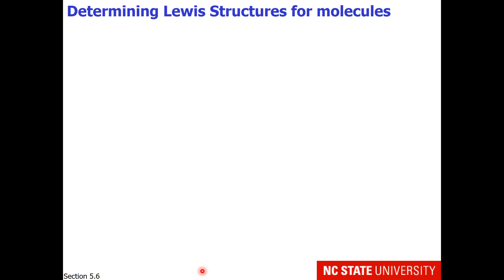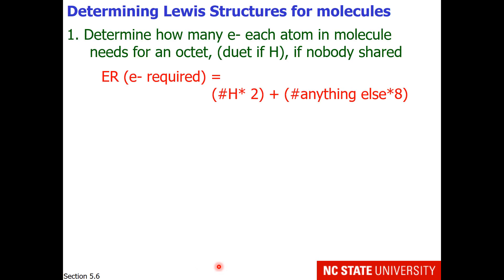So how do you determine the Lewis structure for molecules? I have a list of instructions here that you may refer to later. For now, here's the quick summary. Your first step is to determine what is called electrons required. This says how many electrons each atom in a molecule needs for an octet, or a duet if hydrogen, if the atoms did not share electrons. So electrons required equals the number of hydrogens times 2 plus the other atoms times 8.